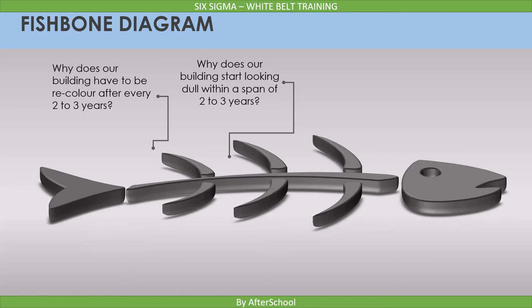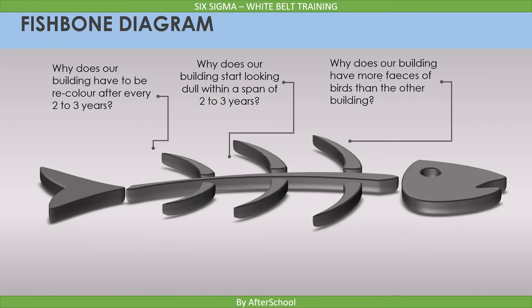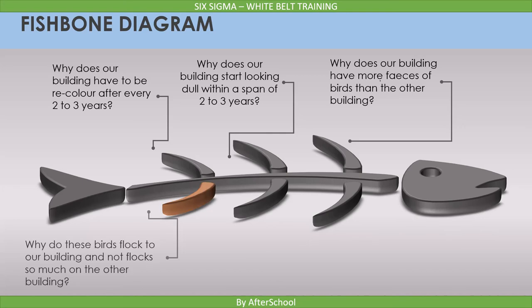Using that answer, the administrator frames the third question: why does our building have more feces of birds than the other building? Someone may answer: because they flock together in our building compared to the other building. The administrator's fourth question is: why do these birds flock to our building and not so much on the other building? The answer: because these birds feed on the insects that appear on our building.